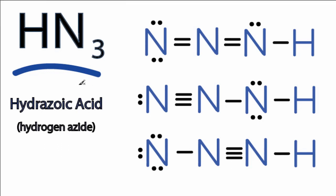For the HN3 Lewis structure there are several ways to draw it. Here we have three Lewis structures and each one of these works in terms of having full outer shells for each of the atoms and using the 16 valence electrons that we have available for the HN3 Lewis structure.